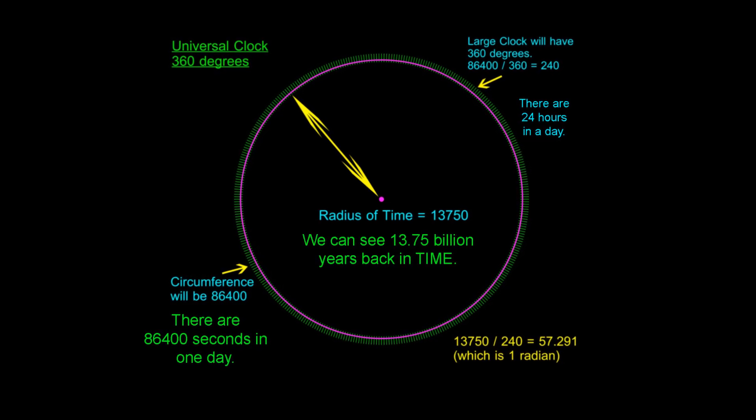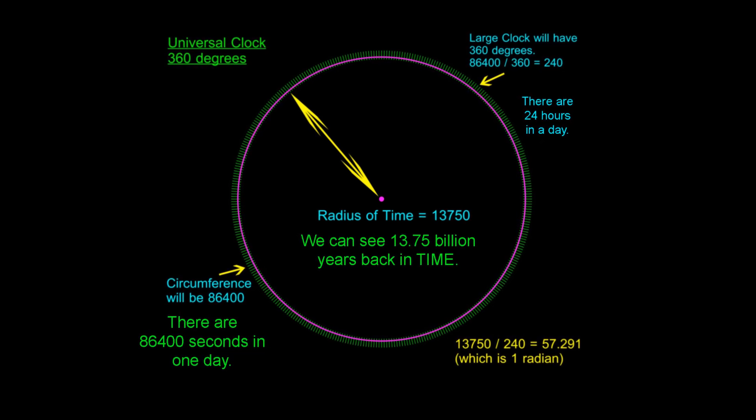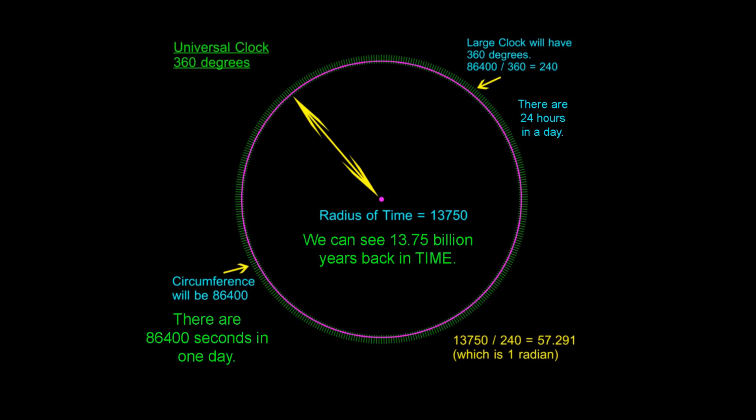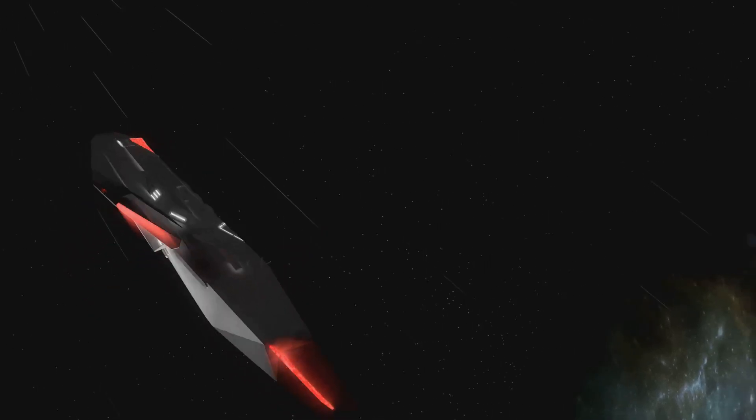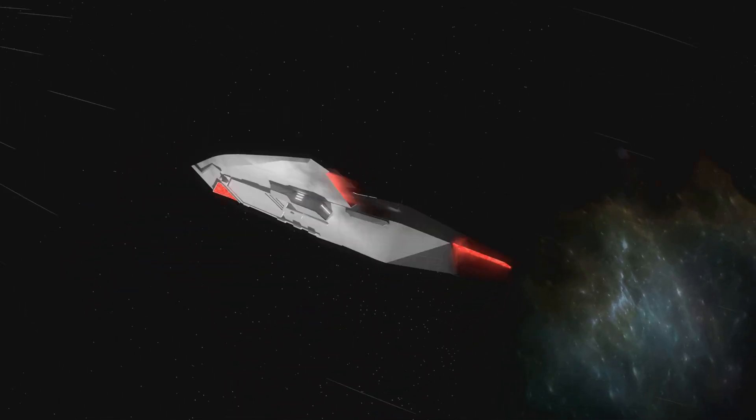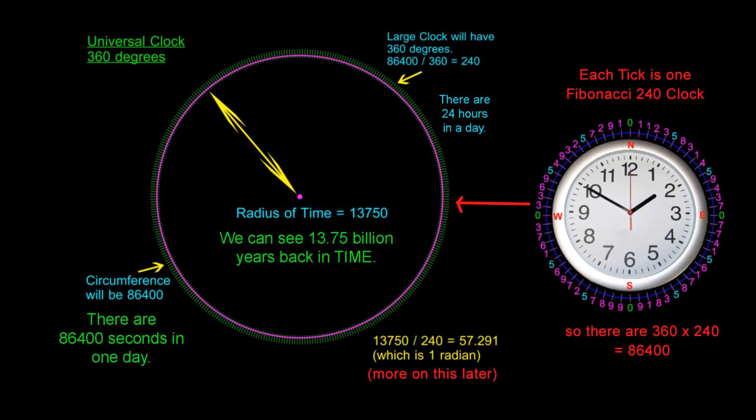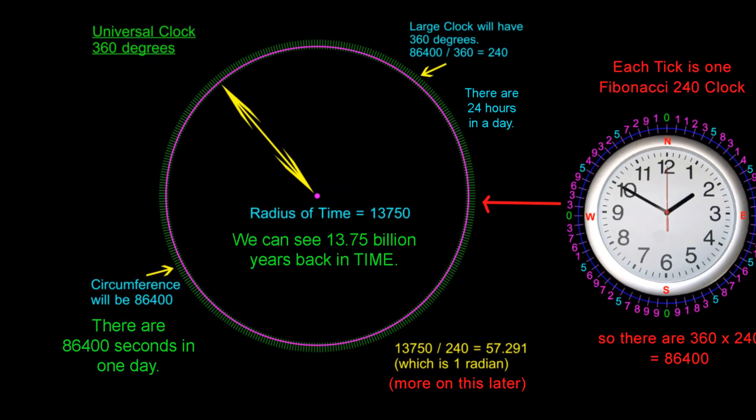Yes, science says it is 13.75 billion years, but once again time is relative. One billion years to us could be one second to an entity moving at close to light speed. All that really matters here is the ratio of the circle's circumference to pi.